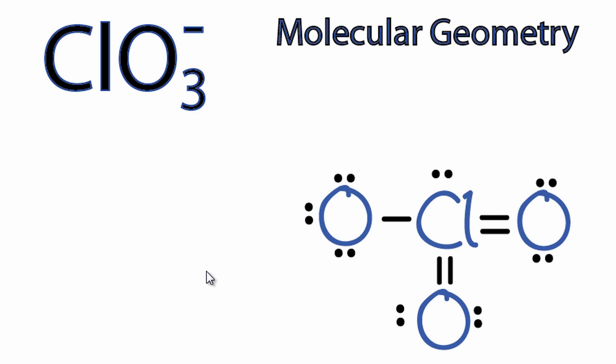So for the chlorate ion, ClO3-, let's find the molecular geometry, or shape. Looking at the Lewis structure, we can see that there are three oxygens and there's one lone pair of electrons.